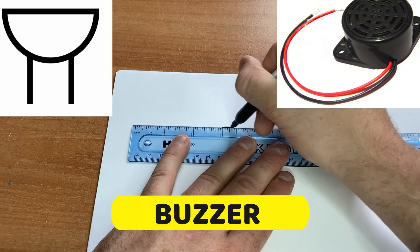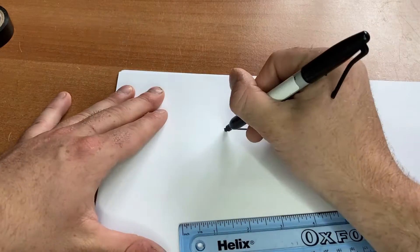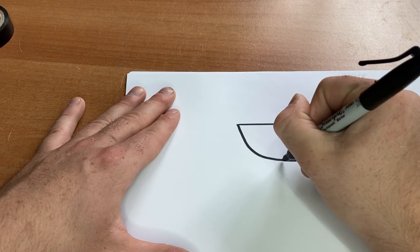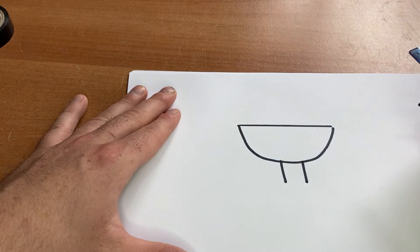Next up we're going to draw a buzzer. It's just a semi circle. And you want to do two little lines down there at the bottom.